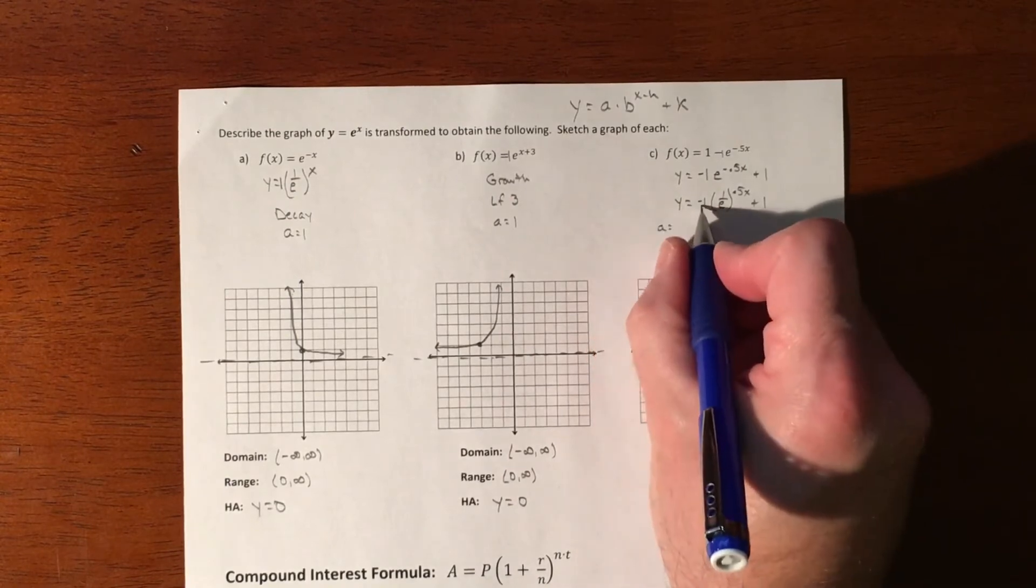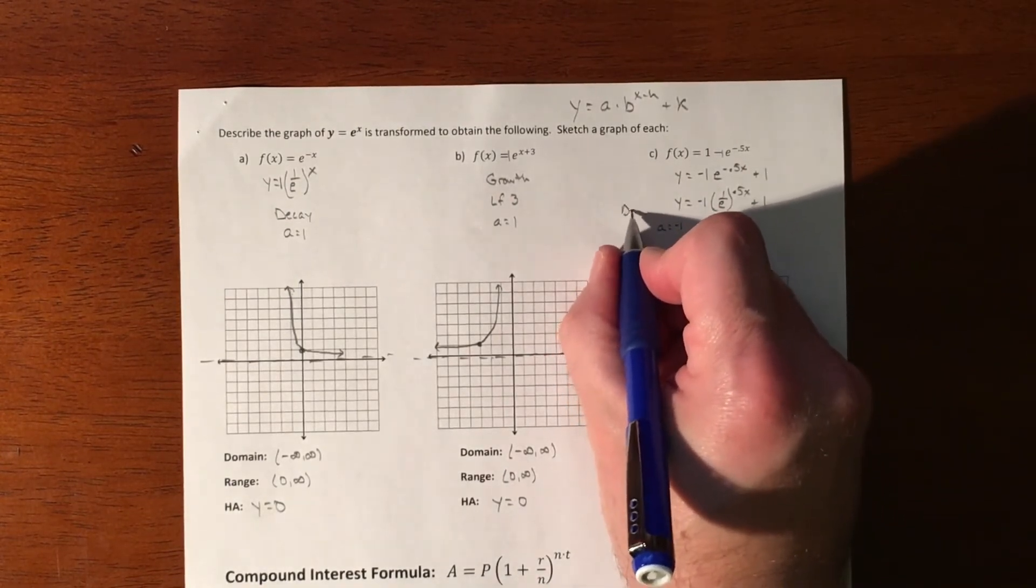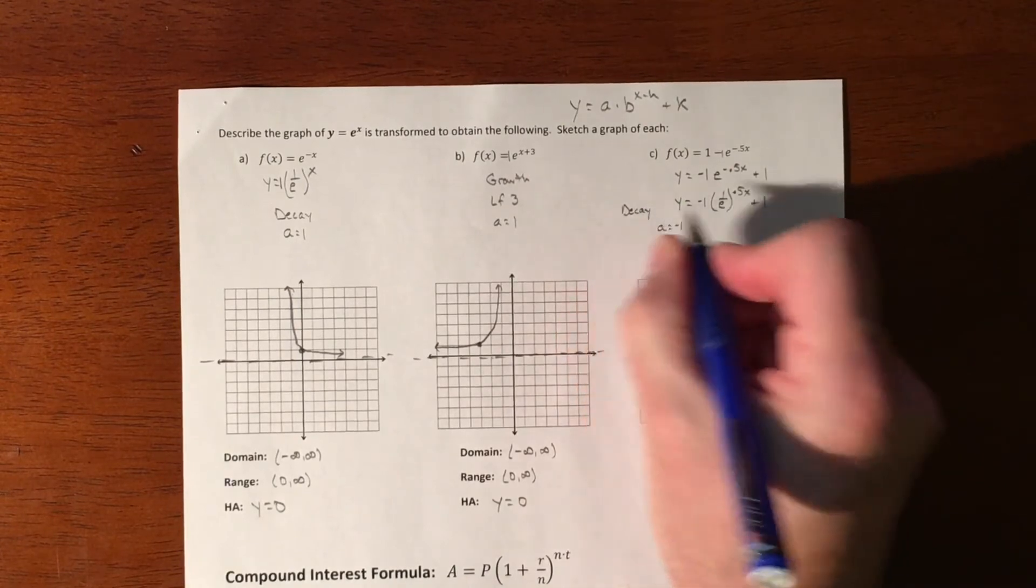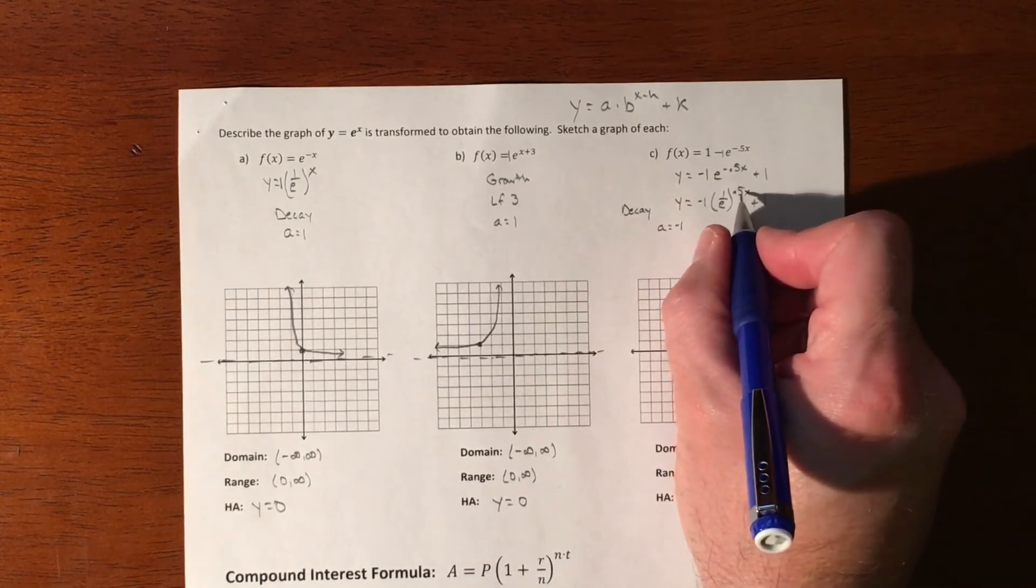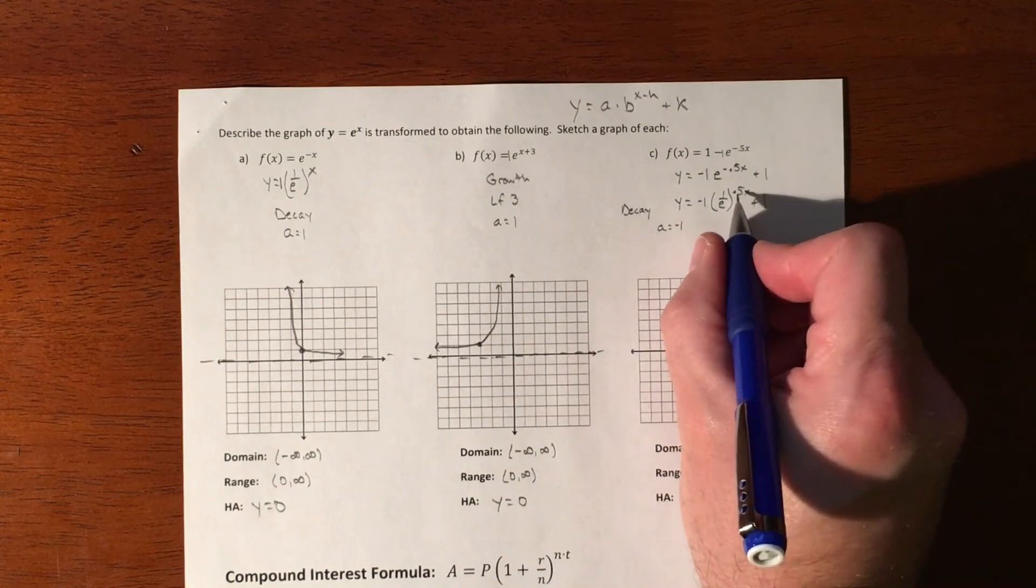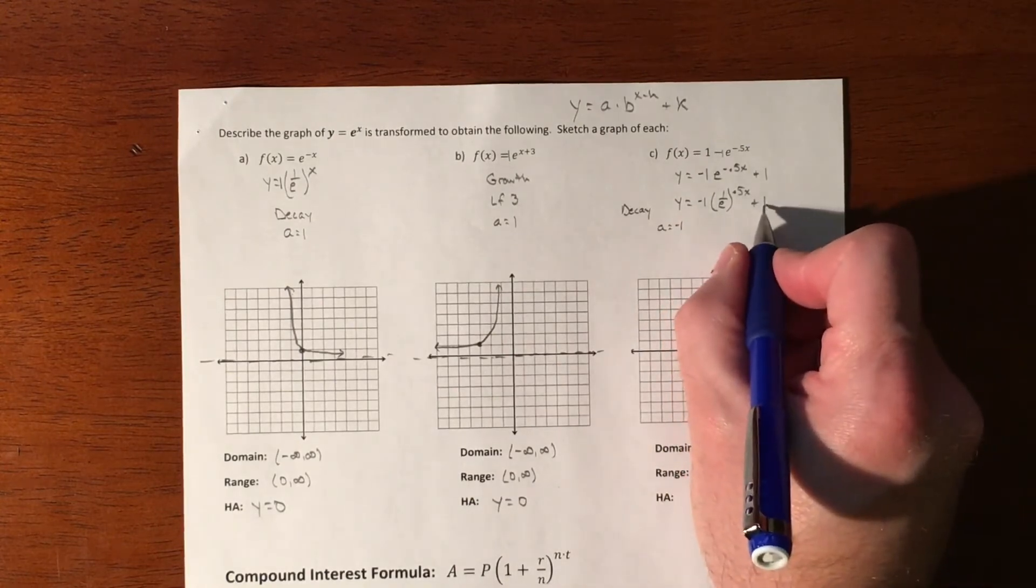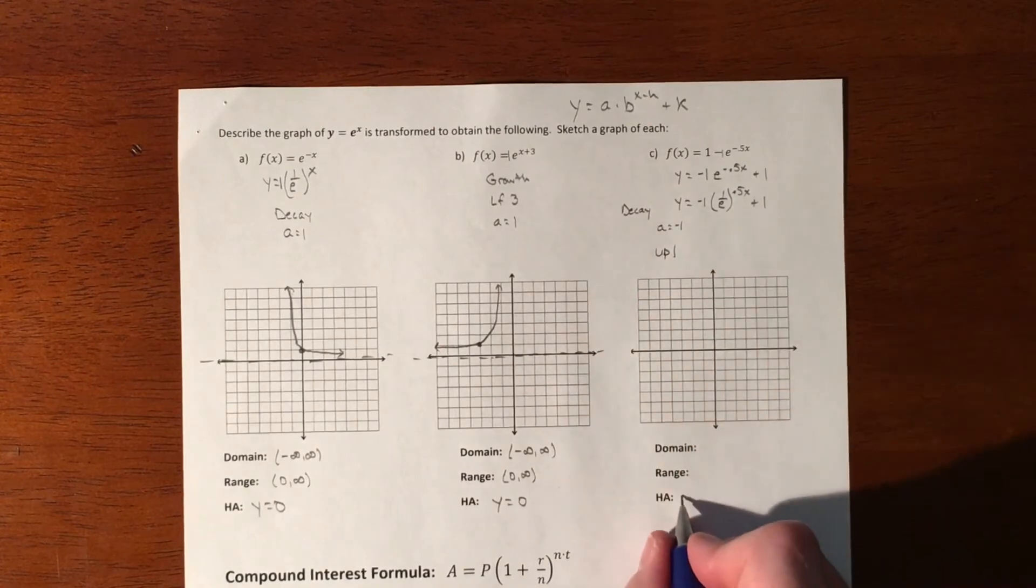So our A value is negative 1. We have decay. Our A value is negative 1. This has a horizontal kind of a compression stretch to it. We won't really see that in our graph because we're just sketching it real quick. And this is an up 1, which is our horizontal asymptote.